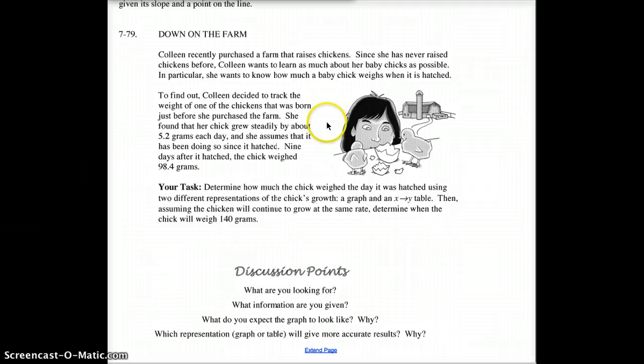She found that her new chick grew steadily at about 5.2 grams each day. So each day it was born, it weighed 5.2 grams more than the day before. She assumes that it's been doing this since the day it was hatched. By the way, nine days after it hatched, the chick weighed 98.4 grams. So there's your point on a graph right there.